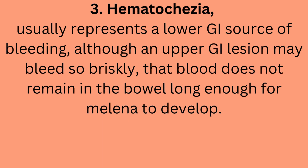Number three: hematochezia. This usually represents a lower GI source of bleeding, although an upper GI lesion may bleed so briskly that blood does not remain in the bowel long enough for melena to develop.